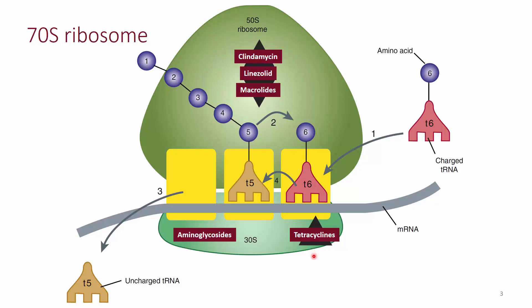Other important antibiotics are tetracyclines and aminoglycosides, which bind to the 30S subunit and also inhibit protein synthesis. So aminoglycosides and tetracyclines compete for the same site — the 30S subunit — whereas clindamycin, linezolid, and macrolides compete for the same site in the 50S subunit.